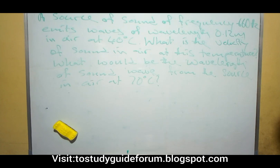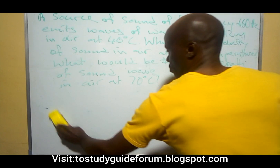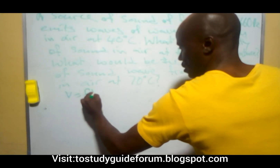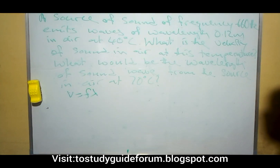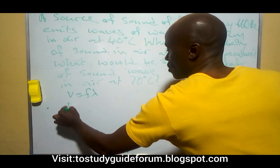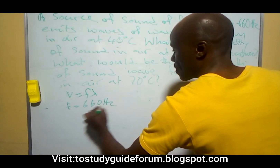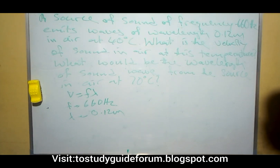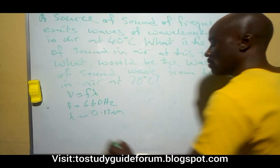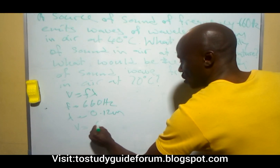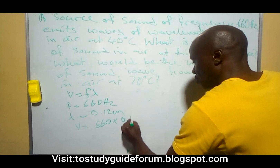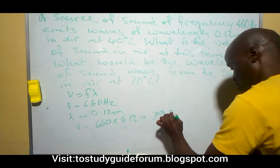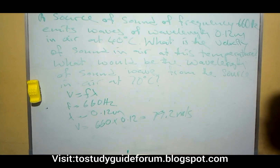The first thing we need to find is the velocity of the sound wave. To get the velocity of the sound wave, we know that velocity equals frequency times wavelength. Our frequency here is 660 Hz and our wavelength is 0.12 meter. So the velocity will then be equal to 660 times 0.12, which gives us 79.2 meters per second.